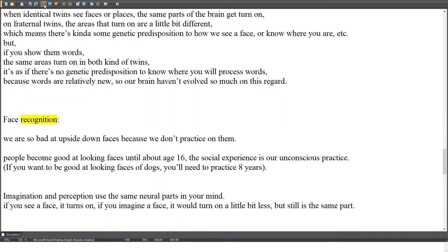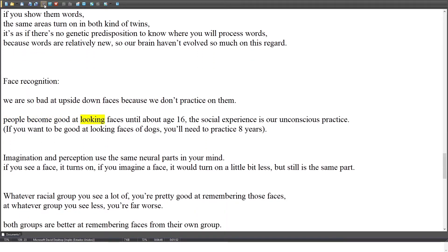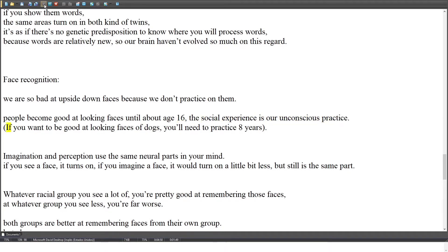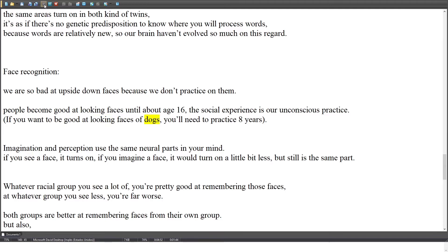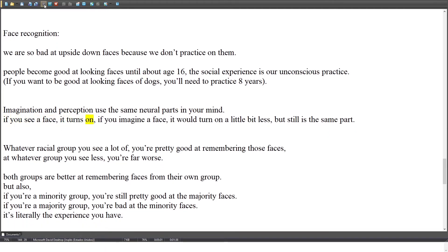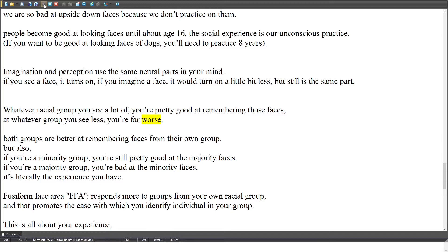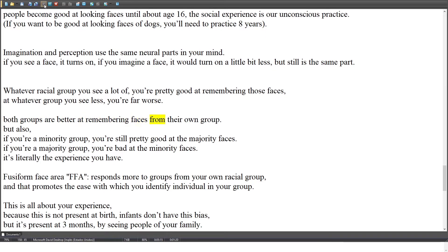We are so bad at upside-down faces because we don't practice on them. People become good at looking at faces until about age 16 — the social experience is our unconscious practice. If you want to be good at looking at faces of dogs, you'll need to practice for about 8 years. Imagination and perception use the same neural parts in your mind: if you see a face it turns on, if you imagine a face it turns on a little bit less, but it's still the same part. Whatever racial group you see a lot of, you're pretty good at remembering those faces; at whatever group you see less, you're far worse. Both groups are better at remembering faces from their own group.